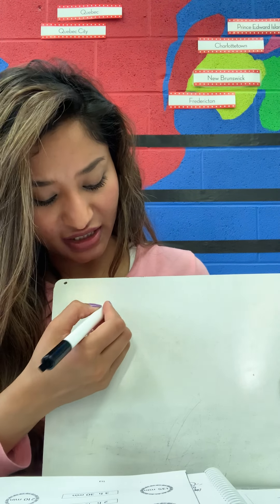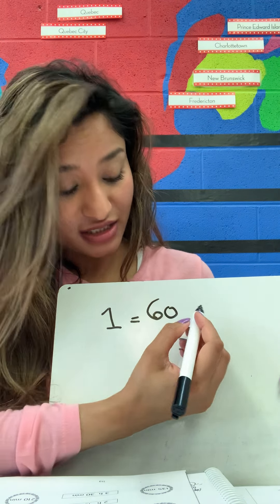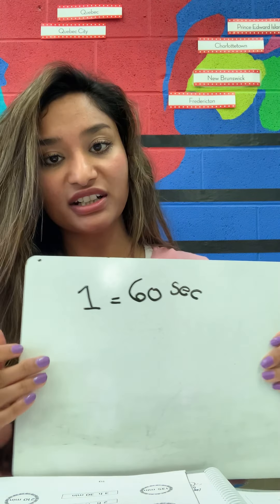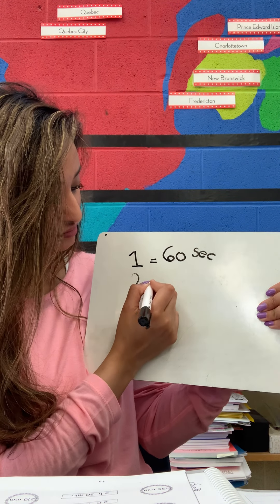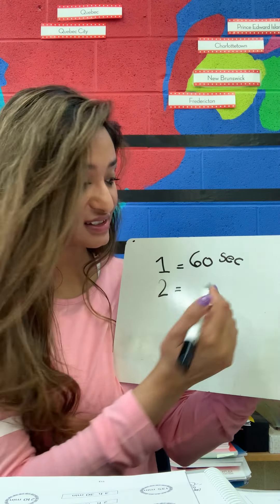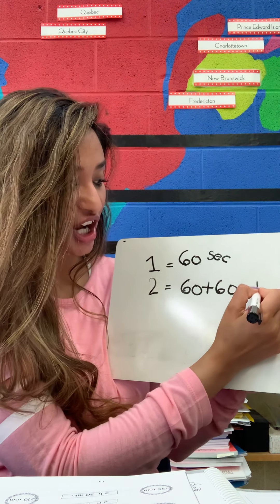So in exercise 38, we are going to learn about minutes and how many minutes are there in one hour, how many minutes are there in two hours, in three, all the way to ten. And I'm sure you already know that in one minute there are 60 seconds, and in two minutes there are 60 plus 60 seconds, which would give us 120 seconds.